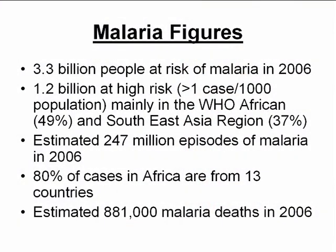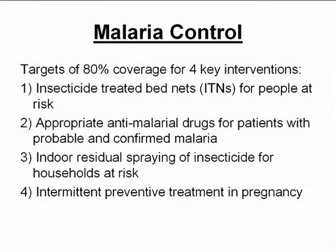Malaria figures from WHO: 3.3 billion people at risk of malaria, 1.2 billion at high risk, mainly in the WHO African and Southeast Asia regions. There are an estimated 247 million episodes of malaria in 2006, 80% occurring in Africa, with an estimate of 880,000 deaths. The current four key interventions targeting 80% coverage are insecticide-treated bed nets, appropriate anti-malarial drugs, indoor residual spraying, and intermittent preventive treatment in pregnancy.